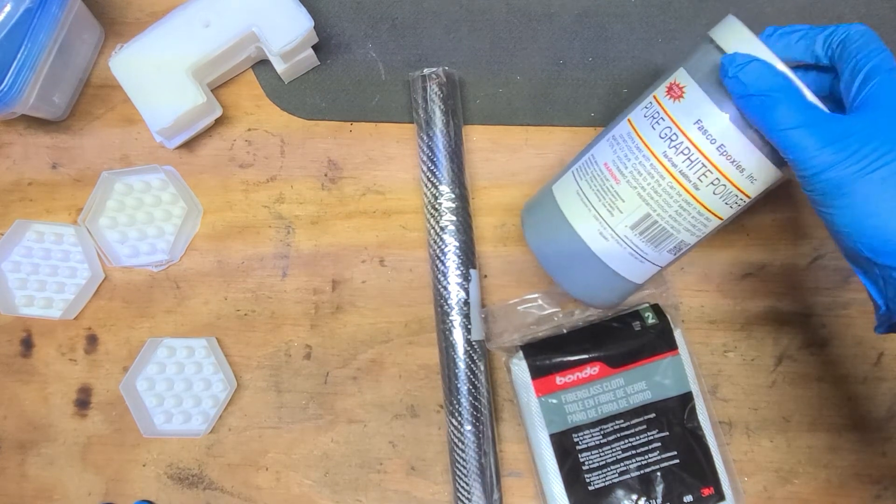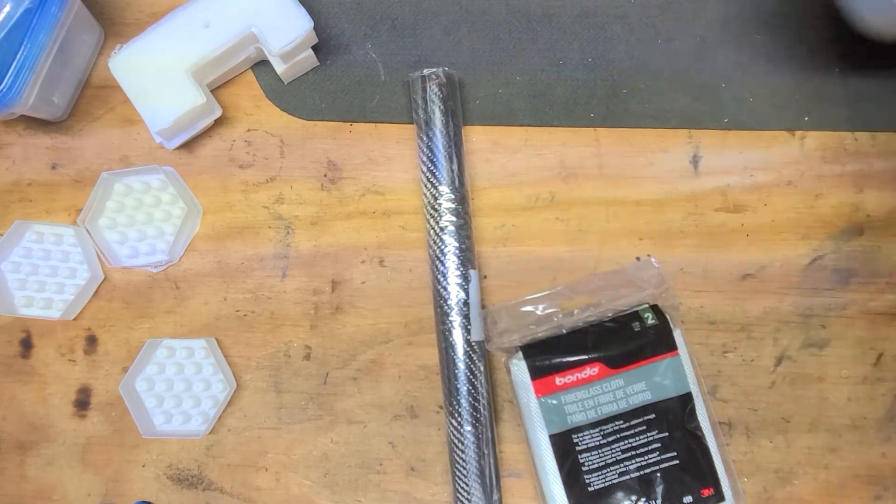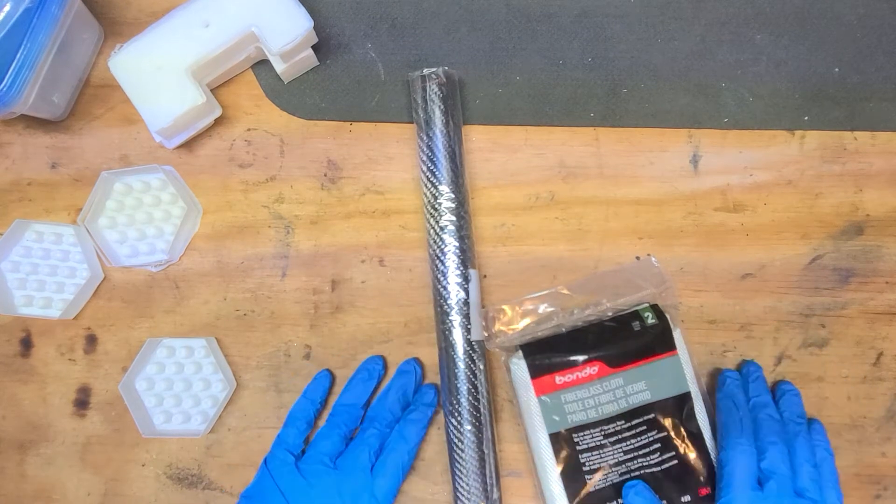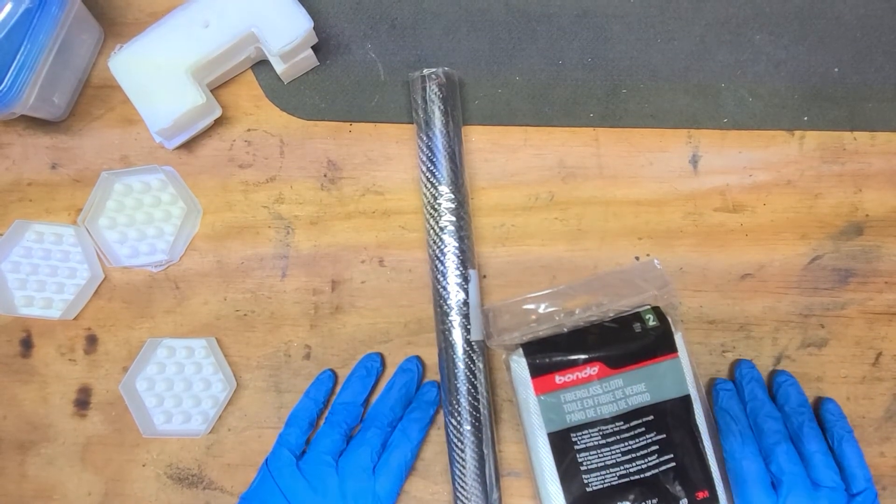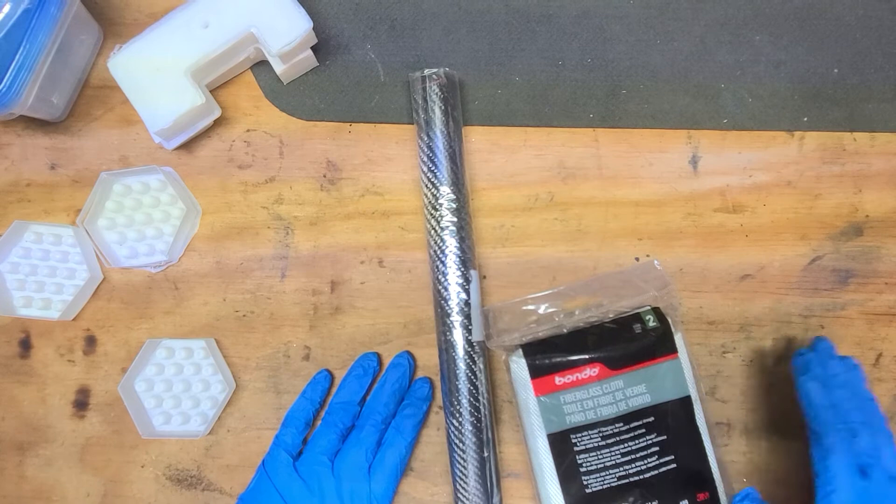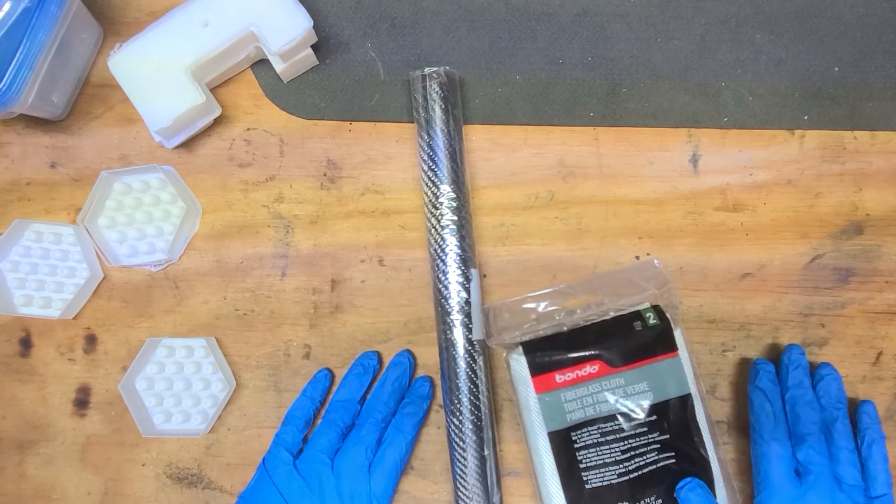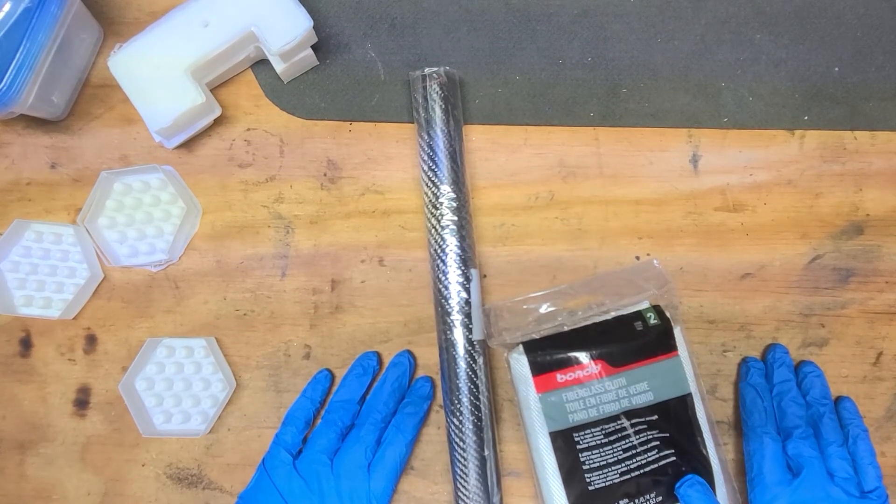That right there shows some promise, especially with this. If you add it in a 10% ratio, graphite powder, it gives it something to bond to. So my thought is, if you were to buy a barrel liner in whatever caliber you want, it's already rifled.